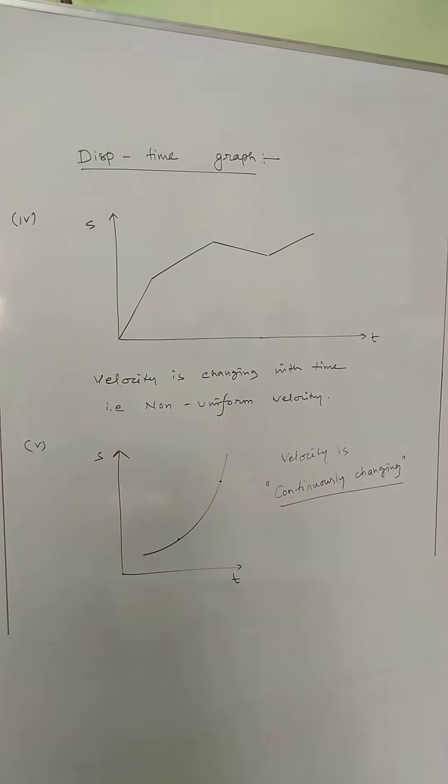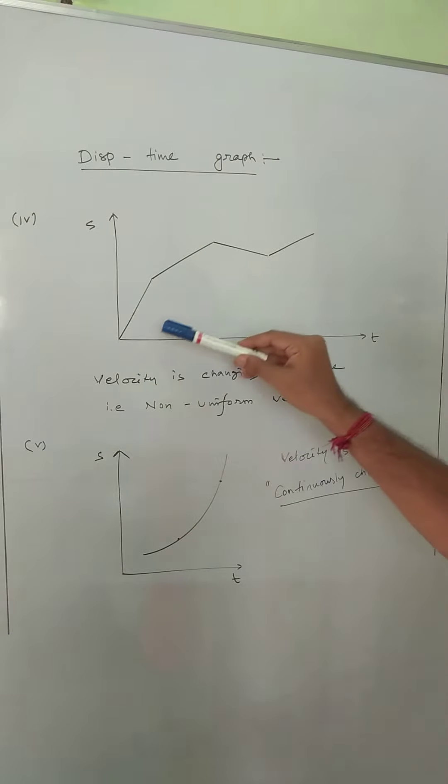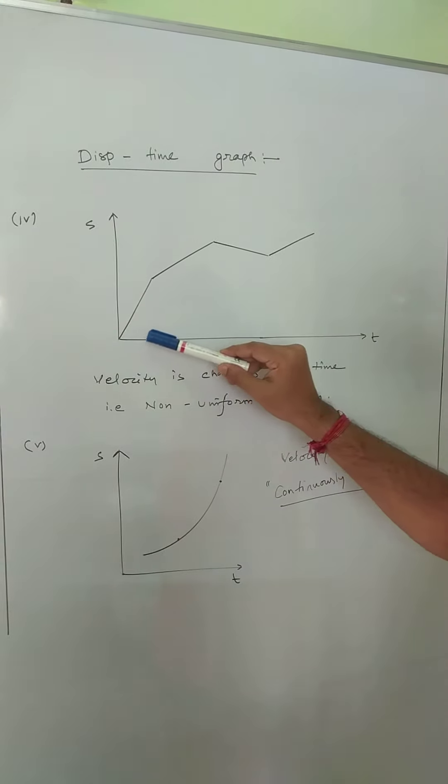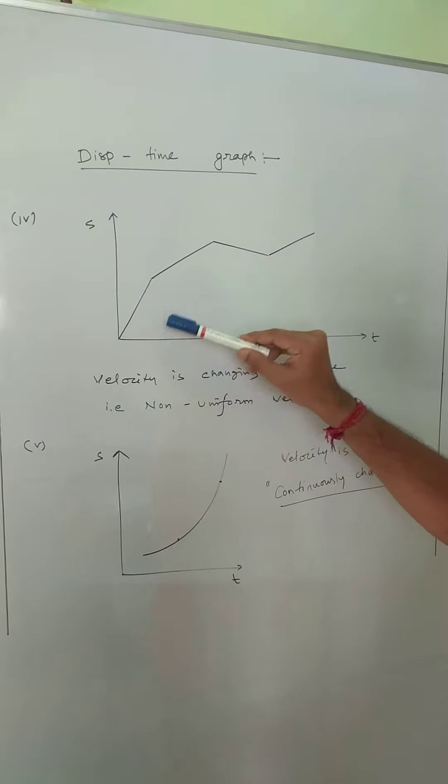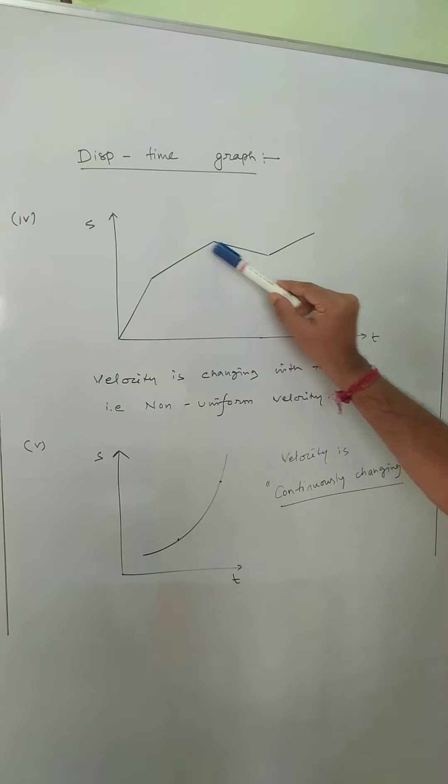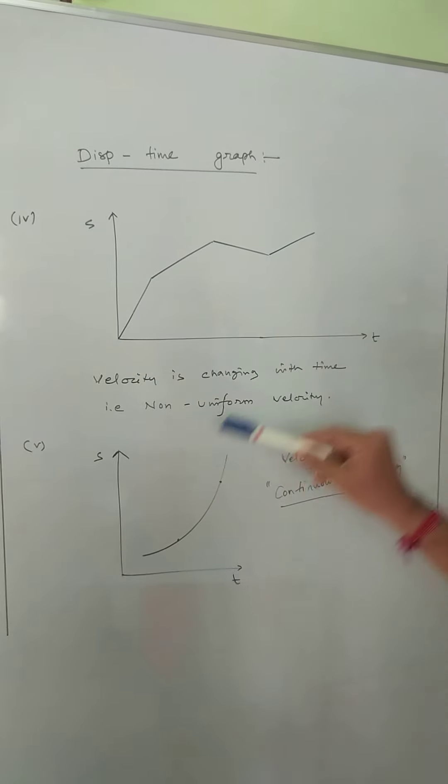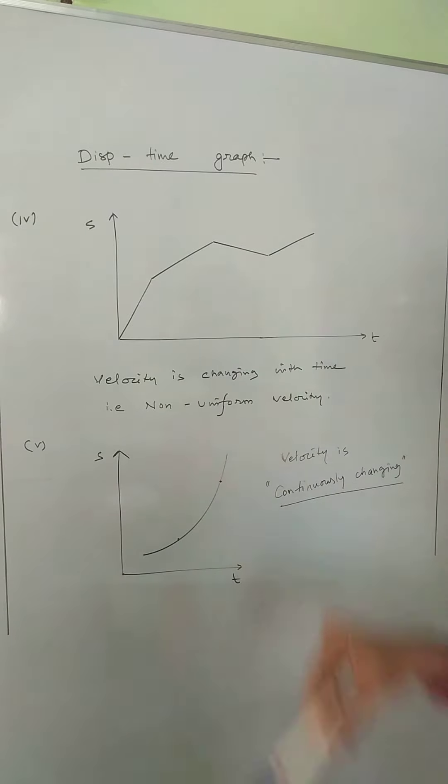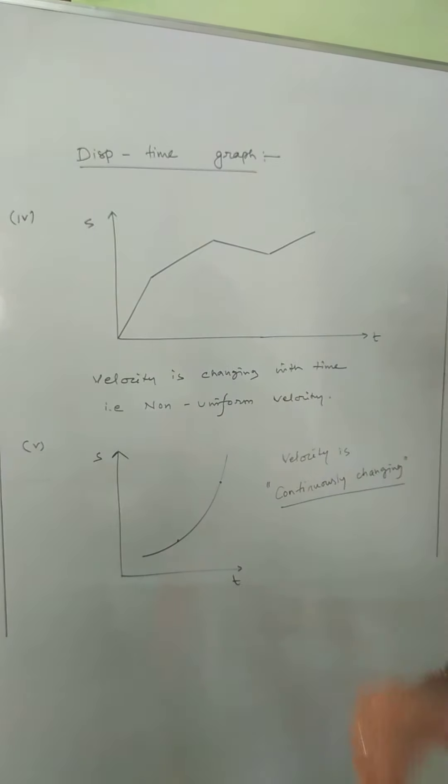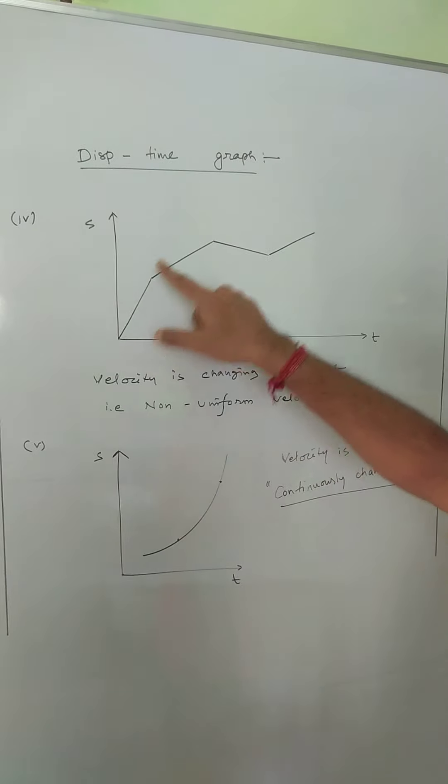Now the next one is the displacement-time graph of an object where the displacement is different for different times. This type of graph means the velocity is changing with time. That means the velocity is non-uniform velocity. In this particular case, if you want to find out the average velocity, we have to find the total displacement by total time.